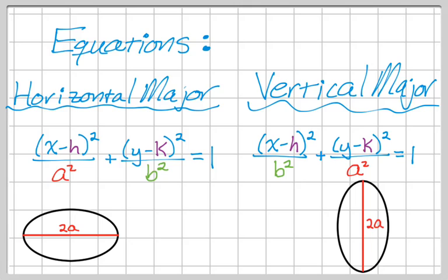And then don't forget, or maybe I didn't point it out yet, but a is always going to be greater than b, which is how you get a major axis when you do 2a versus 2b. And also, we can always find c² by doing a² minus b².